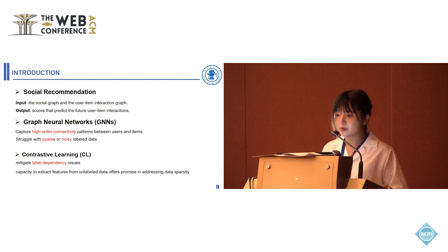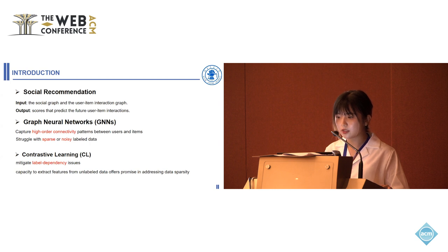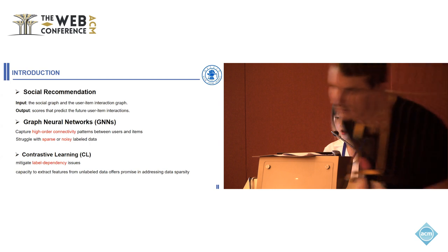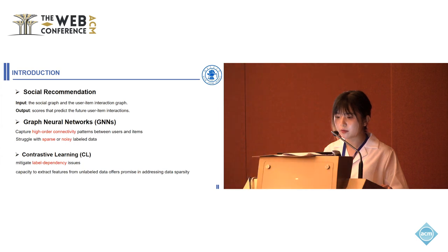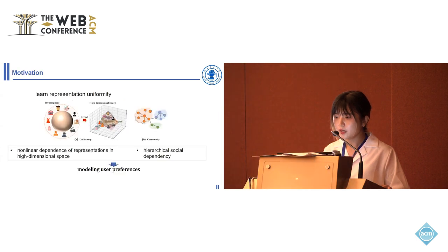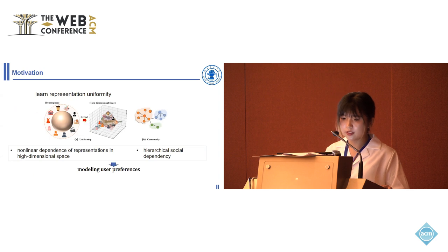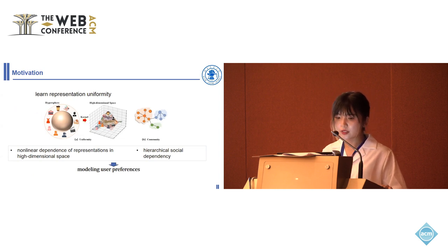To mitigate label dependency issues, contrastive learning has rekindled interest in recommendation. Contrastive learning's capacity to extract features from unlabeled data offers promise in addressing these issues. The efficacy of contrastive learning for recommendation may hinge on its capacity to learn representation uniformity by mapping the data onto a unit hypersphere.